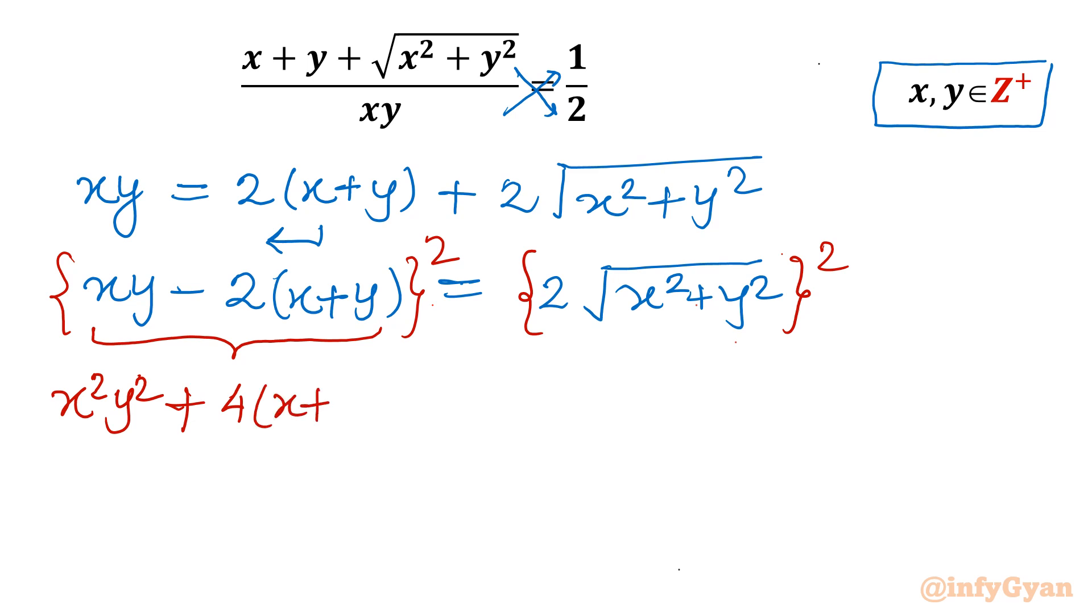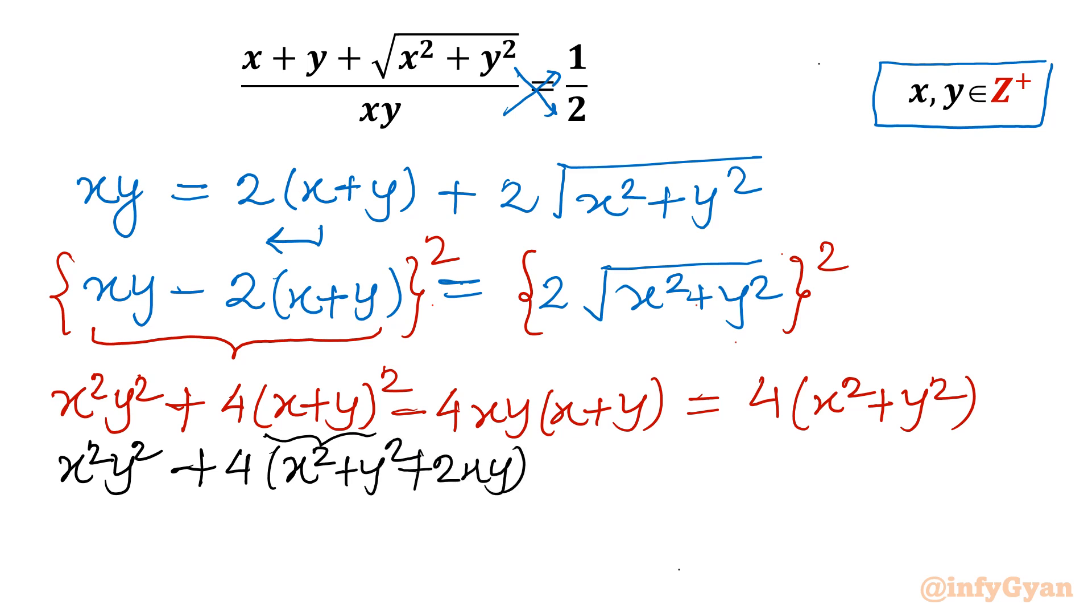So x square y square plus b square. So 4 times x plus y whole square minus 2ab. So minus 4xy x plus y. LHS is done. Now RHS. 2 square is 4. Square root and square will be over. So in bracket I will write x square plus y square. Now I will again expand using a plus b whole square formula here.